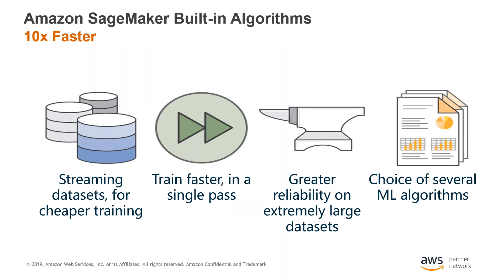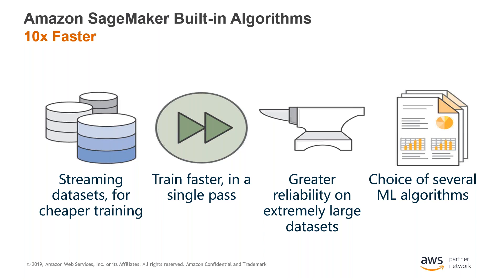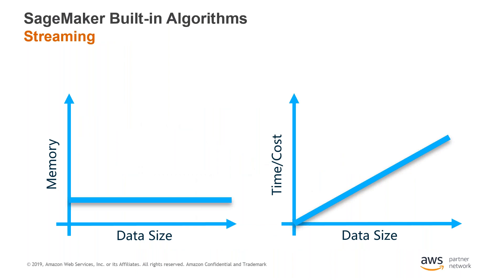Our built-in algorithms have been restructured to make them capable of training on streaming data, training faster in a single pass, and providing greater reliability on large datasets. Examples of built-in algorithms include factorization machines, regression, principal component analysis, k-means clustering, XGBoost, and much more. Traditional machine learning training required a tough trade-off — time versus money. The benefit of streaming is a flat memory requirement regardless of dataset size, and time and cost increase linearly with dataset size rather than being limited by memory capacity.